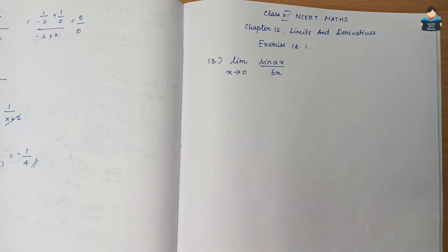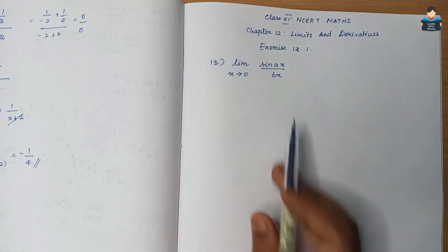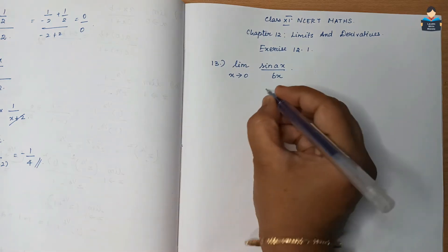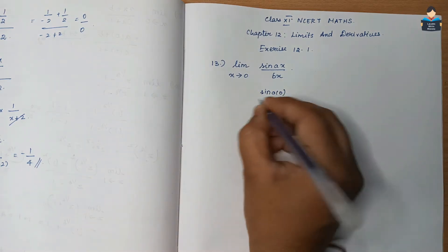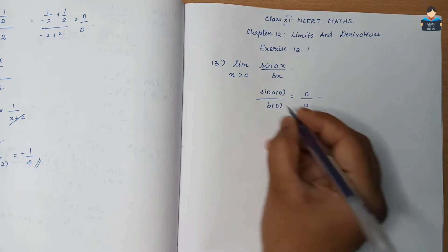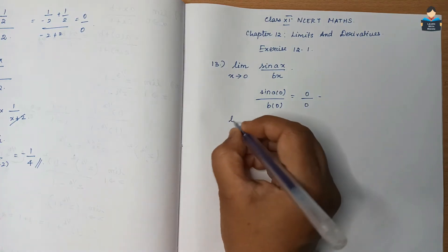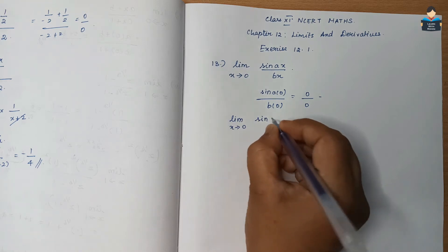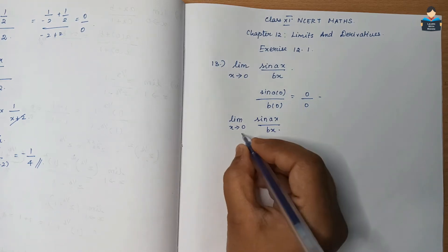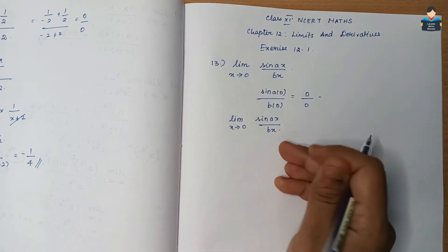Hello everyone, welcome to our channel. In this video, Class 11th NCERT Maths Chapter 12, Limits and Derivatives, Exercise 12.1, Question number 13. We have limit x tends to 0 of sin(ax) by bx. Now we substitute: sin(a×0) by b×0, which is sin(0)/0, giving 0/0. So it is not defined — we need to simplify, and we apply the standard formula.